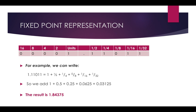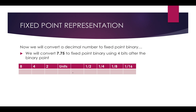Adding those up we get a result of 1.84375. So using fixed point representation, the binary number 1.11011 equals 1.84375 in decimal. Now we can do it the other way around and convert a decimal number to fixed point binary. If we take the number 7.75 and convert that to fixed point binary using four bits after the binary point, we have four columns on the left — units, 2, 4, and 8 — and four on the right: 0.5, 0.25, 1 over 8, and 1 over 16.